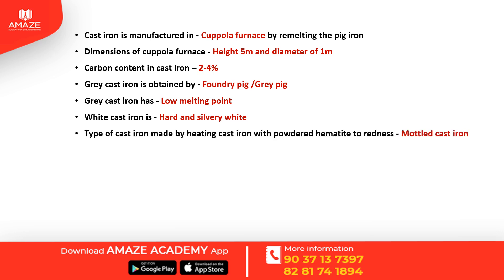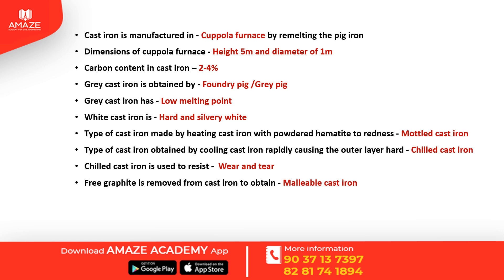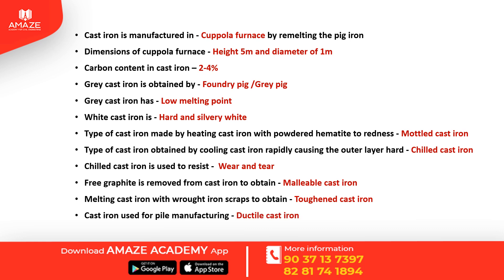Mottled cast iron is produced using powdered hematite. Chilled cast iron is formed when the outer layer is cooled rapidly, making it hard, and is used to resist wear and tear. Malleable cast iron is produced by removing free graphite. Melting cast iron with wrought iron scraps produces toughened cast iron. Ductile cast iron is used for pipe manufacturing.